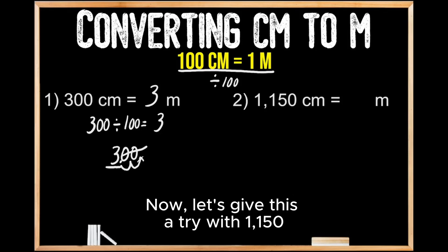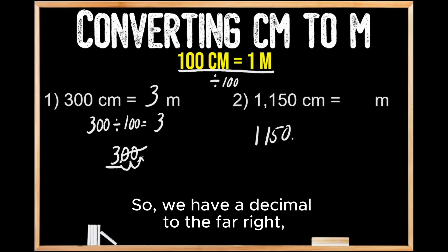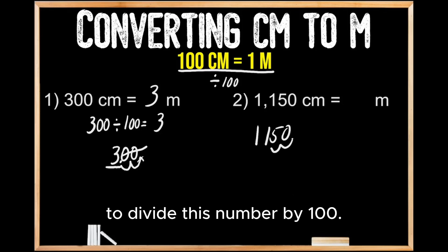Now, let's give this a try with 1,150 to convert those centimeters into meters. So we have a decimal to the far right, and then we're going to move that decimal place twice to the left to divide this number by 100.